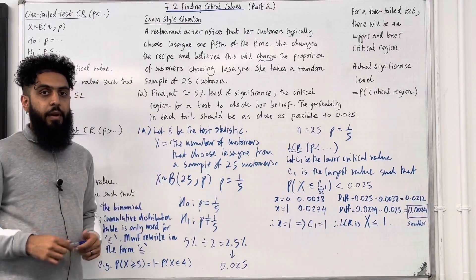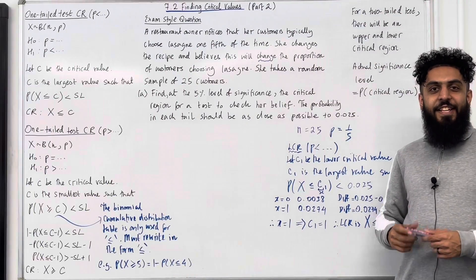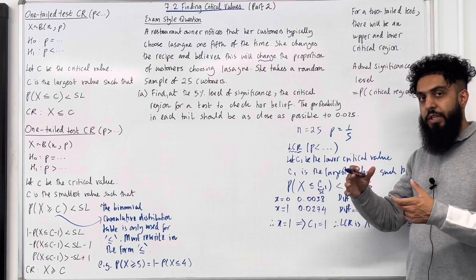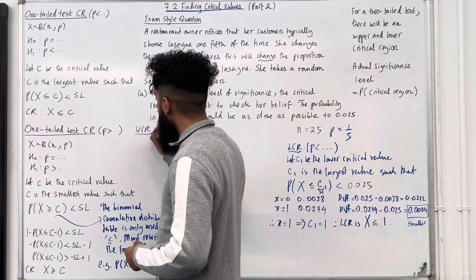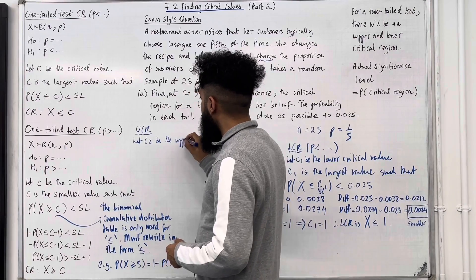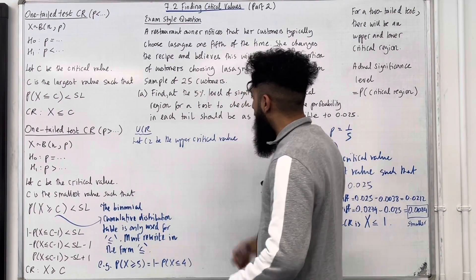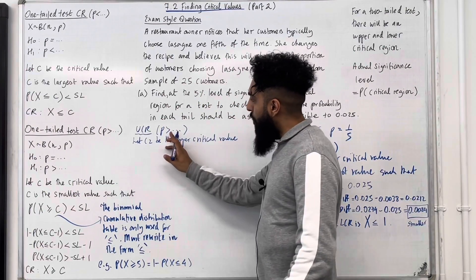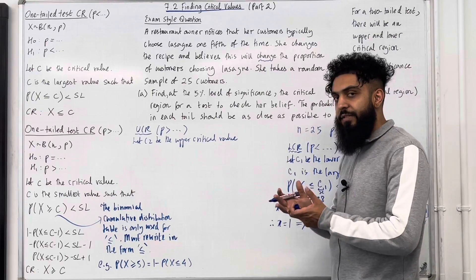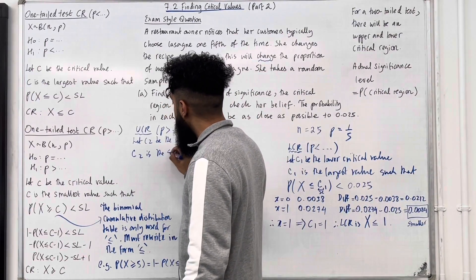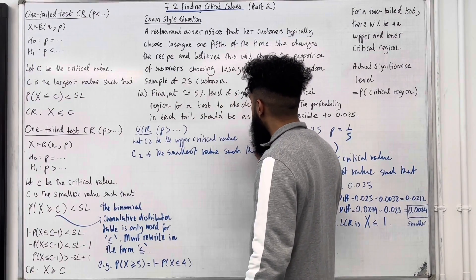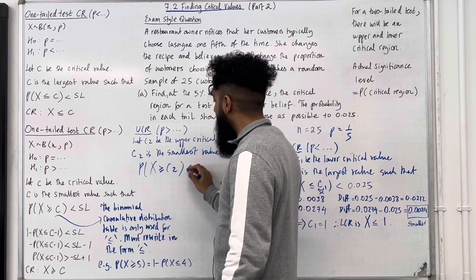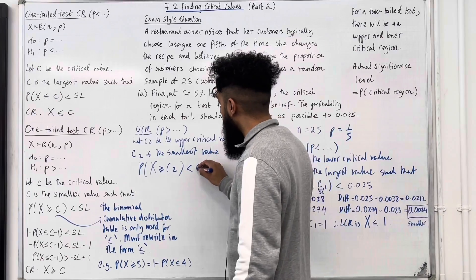Now I'll find the upper critical region. Let C2 be the upper critical value. The upper critical region corresponds to P greater than. C2 is the smallest value such that P(X ≥ C2) < 0.025. Since I have greater than or equal to, I rewrite this as 1 minus P(X ≤ C2 − 1) < 0.025, which rearranges to P(X ≤ C2 − 1) > 0.975. I'll use the binomial cumulative distribution function table with N equal to 25 and P equal to 0.20.